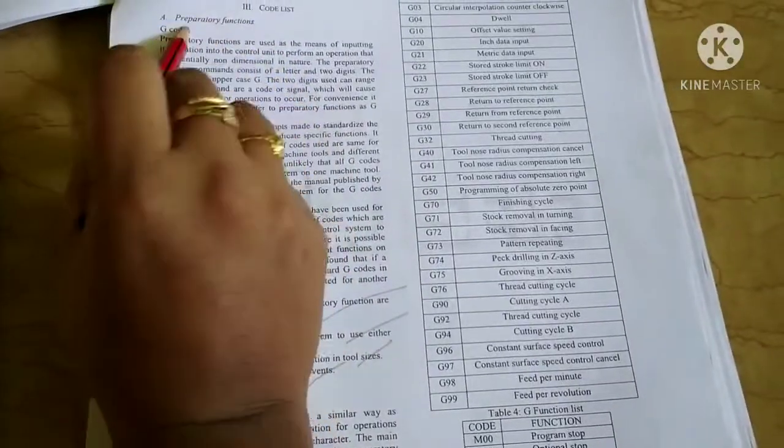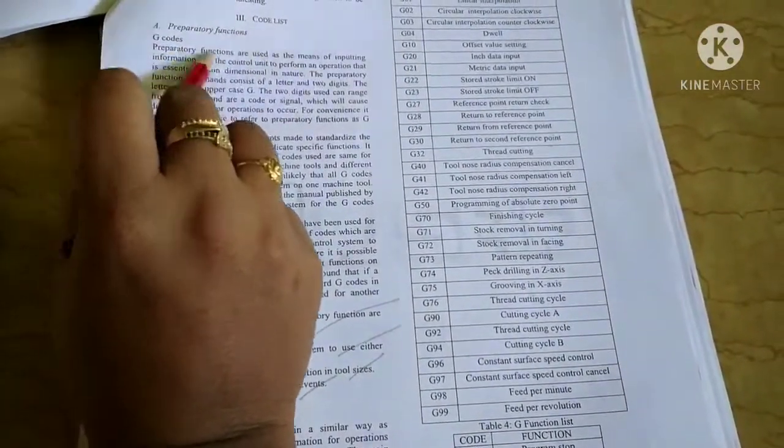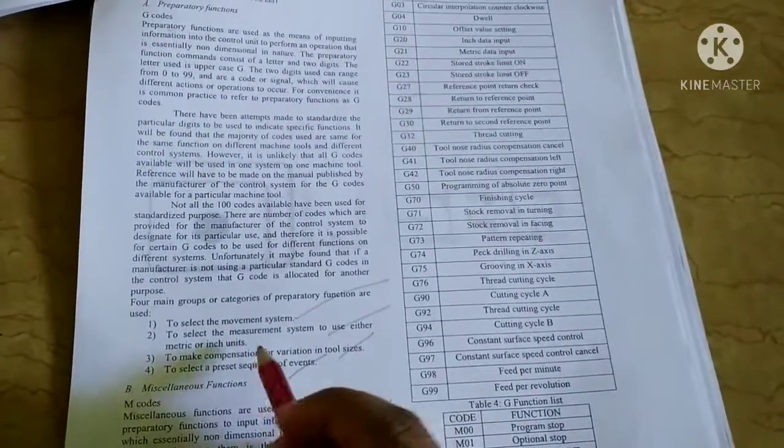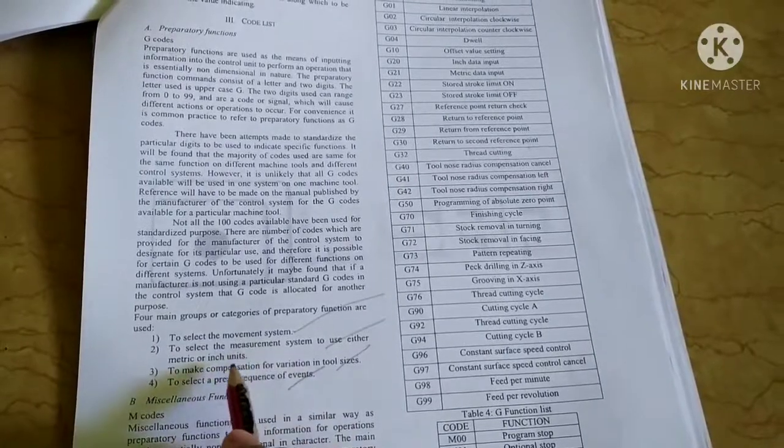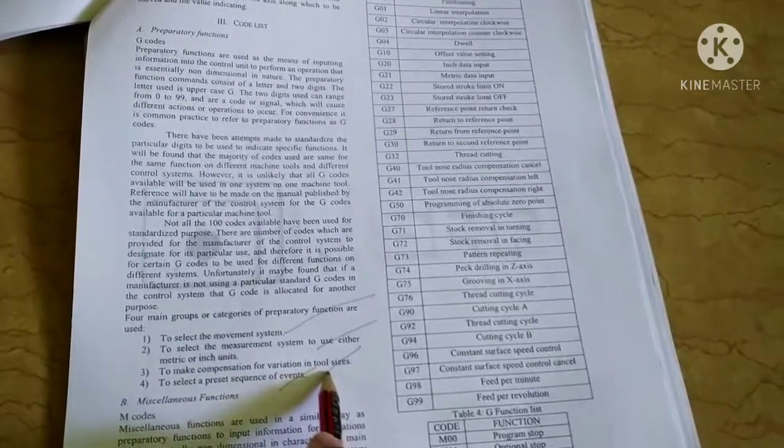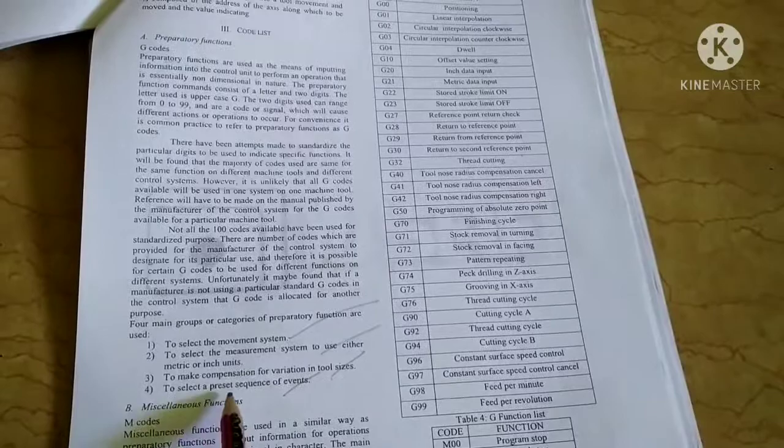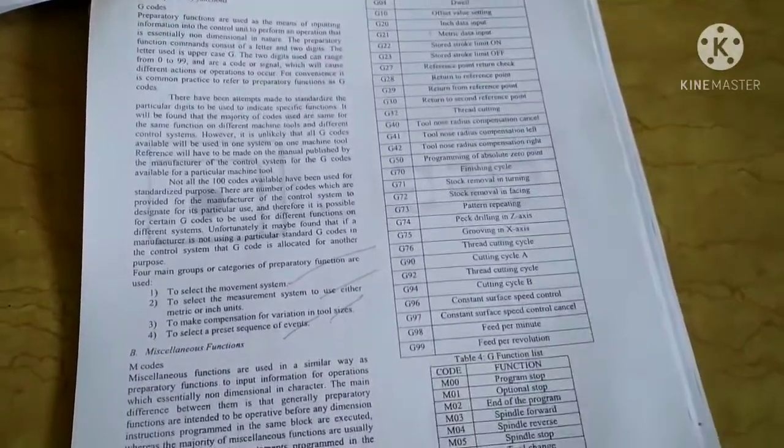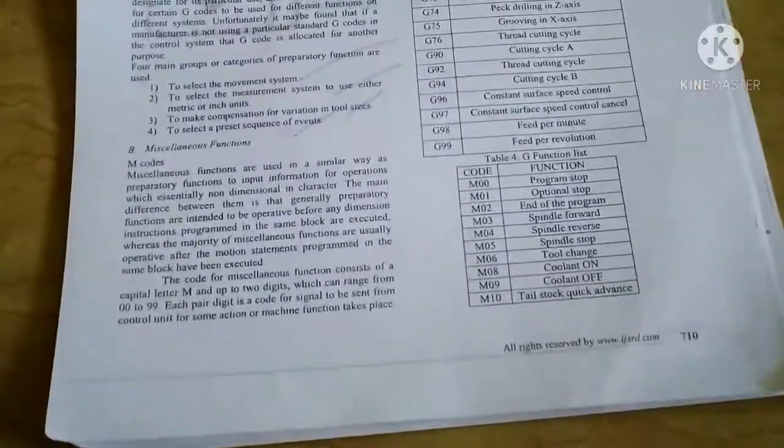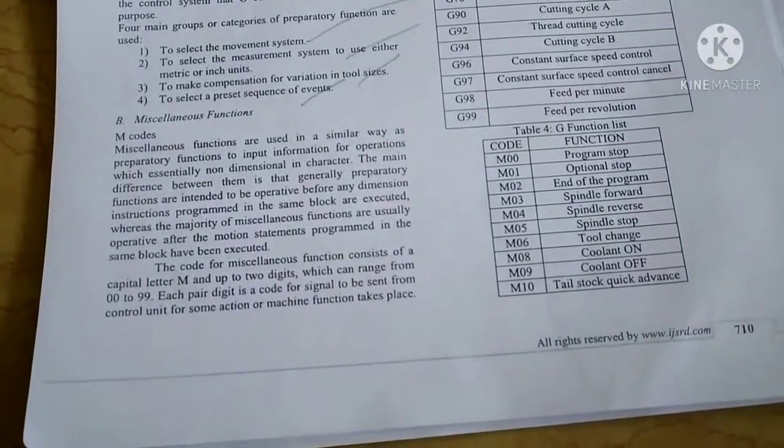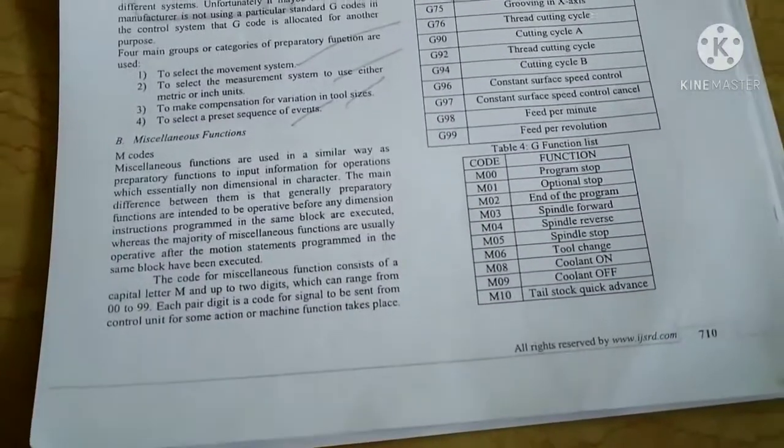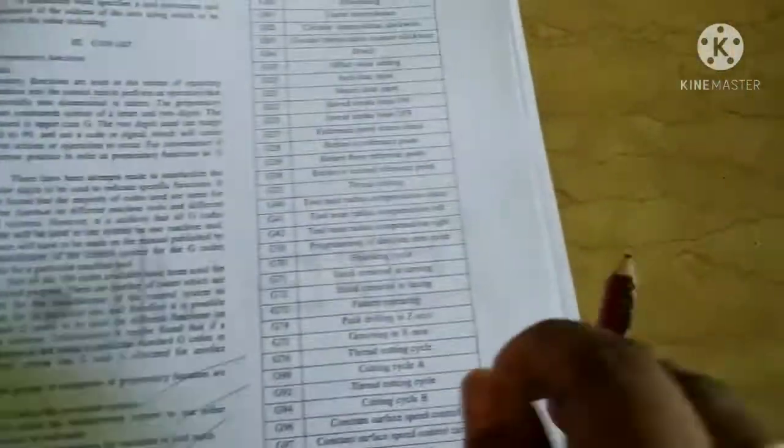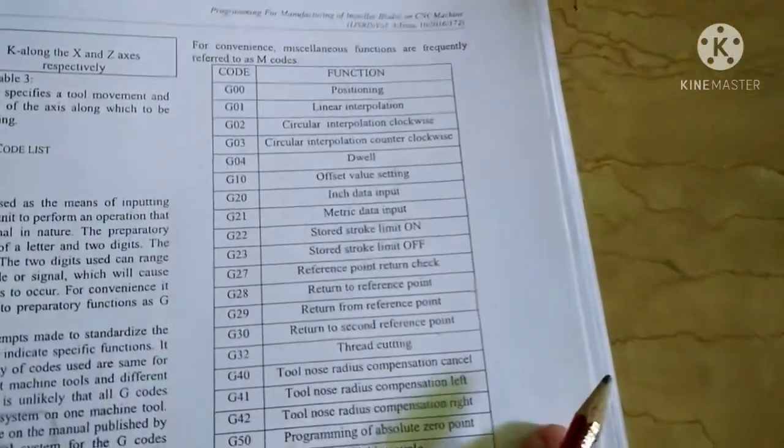G-codes are preparatory functions, meaning automation of the machine tools. The machine tools include shaping tool, milling tool, and drawing tool. M-codes means miscellaneous functions.